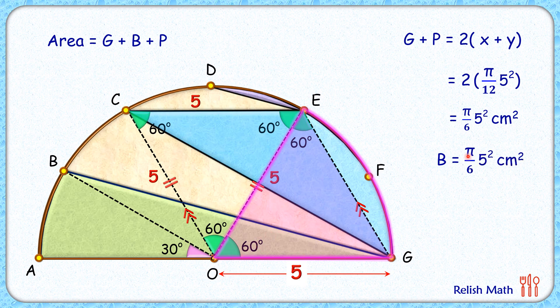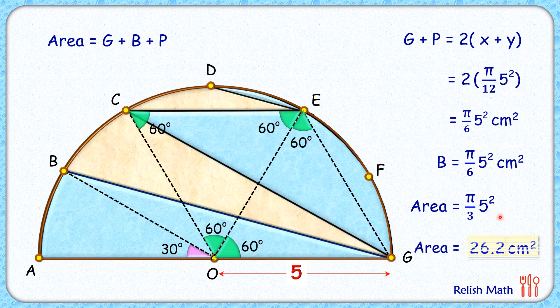And thus, the total area which we had to find is the sum of π/6 times 5² and π/6 times 5², which is nothing but π/3 times 5². Simplifying it, we'll get our blue shaded region as 26.2 centimeter square, and that's our answer.